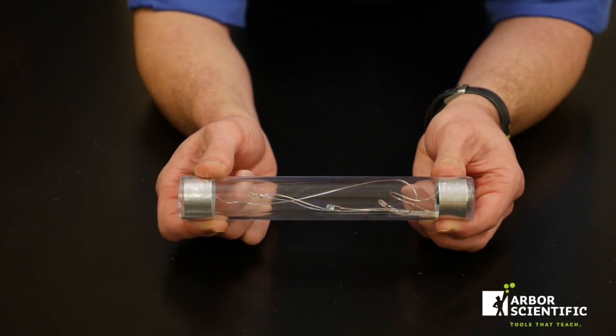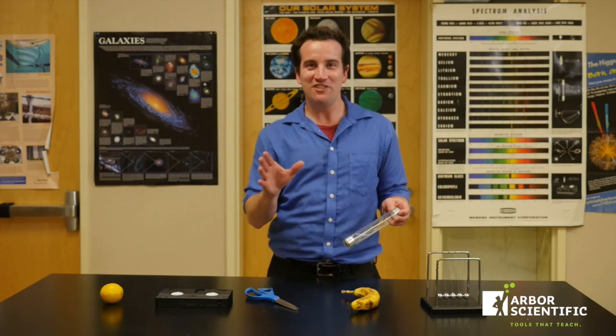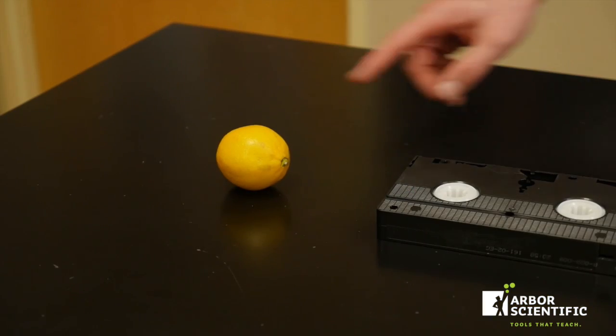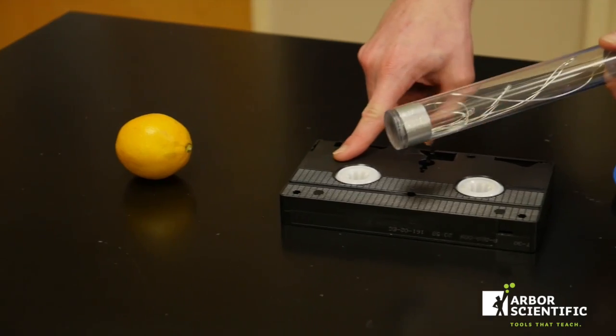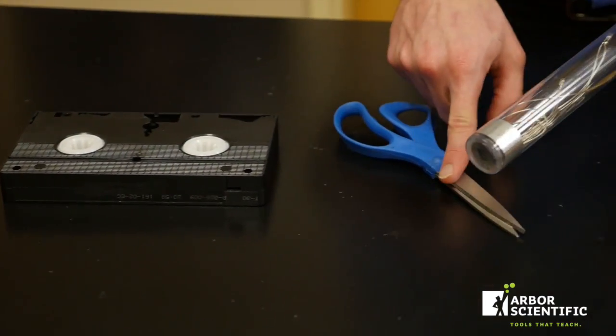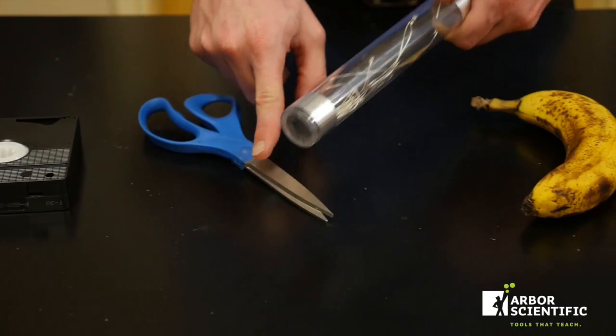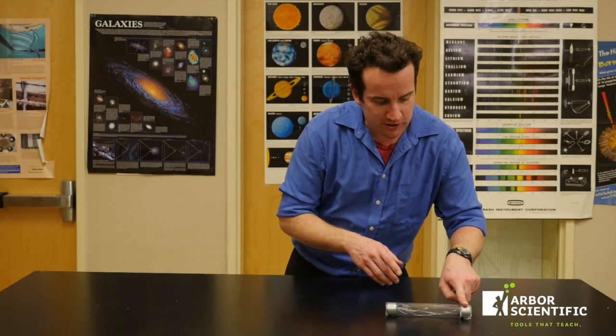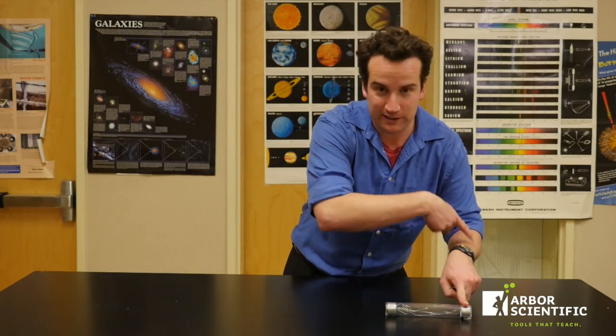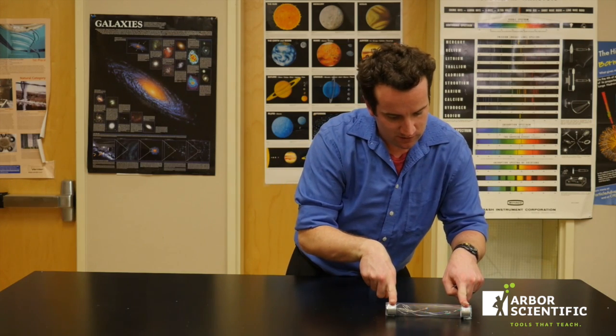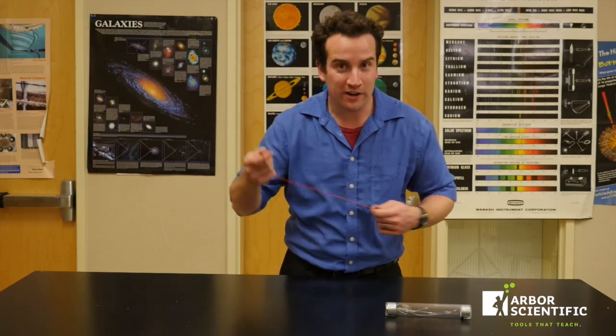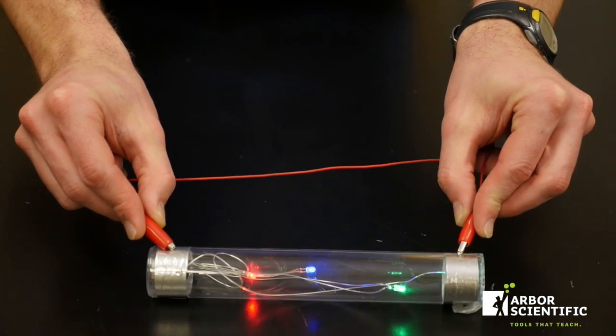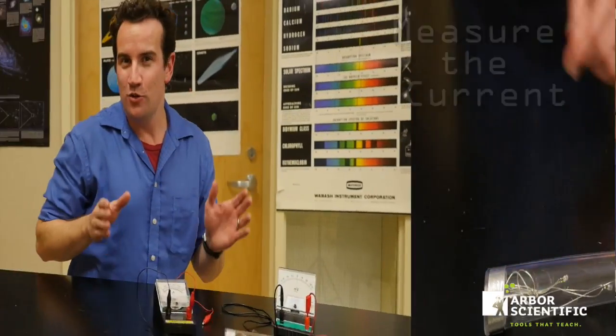You can even check household items for conductivity and even your fellow human. The device is triggered when a very small current is allowed to pass from one of the foil ends to the other. You can even trigger it with just a wire, and you can do experiments to measure the current.